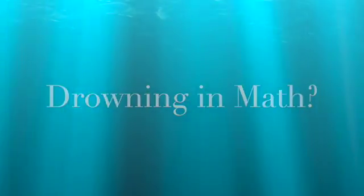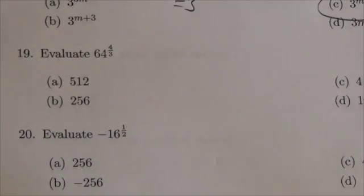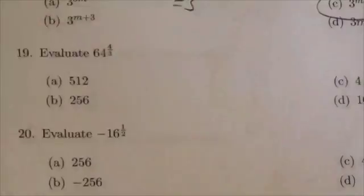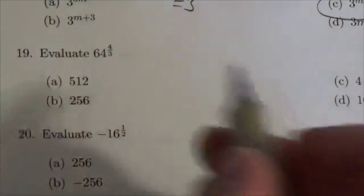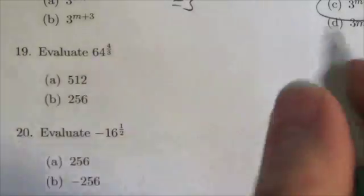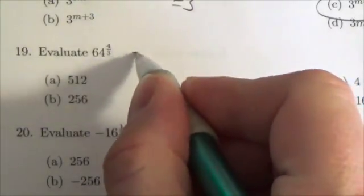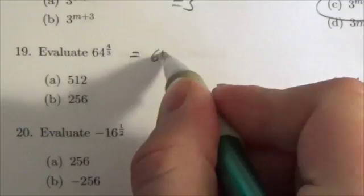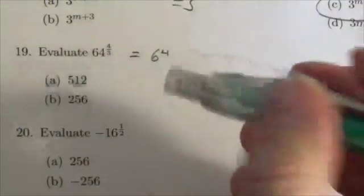Hi everybody, this is the Math 10C exponents and radicals review, multiple choice question 19. It says evaluate 64 to the four-thirds. 64 to the four-thirds means either 64 to the four...